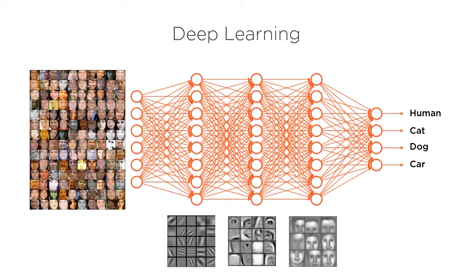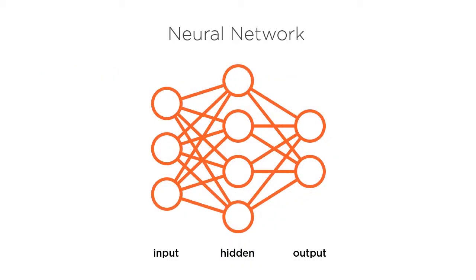We typically create deep learning models using a neural network. A neural network is a graph of nodes and edges based roughly on the organization of neurons in an organic brain. The nodes represent neurons in the brain. The edges represent the connections between the neurons.